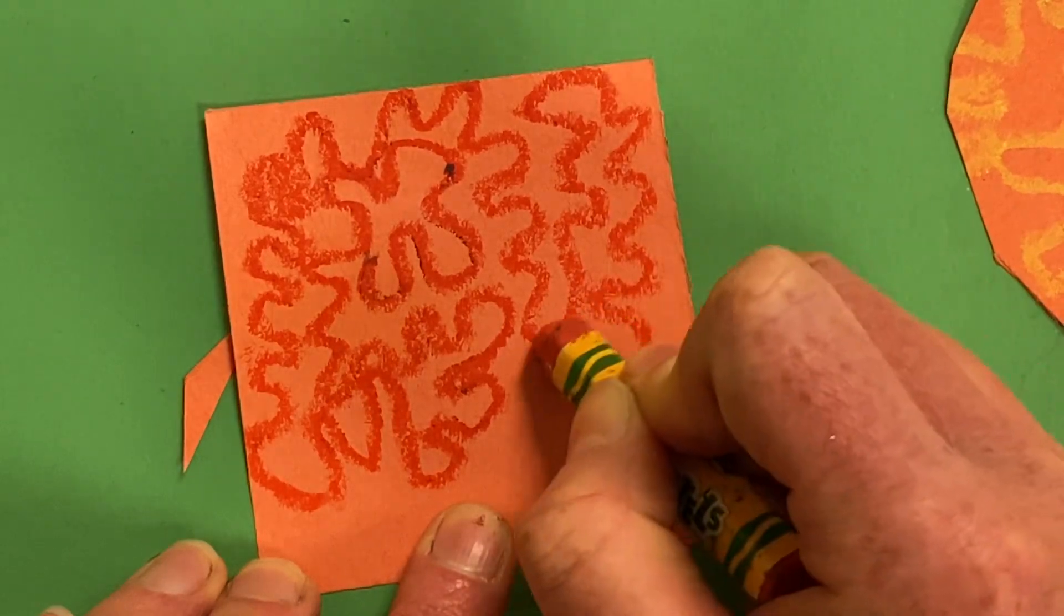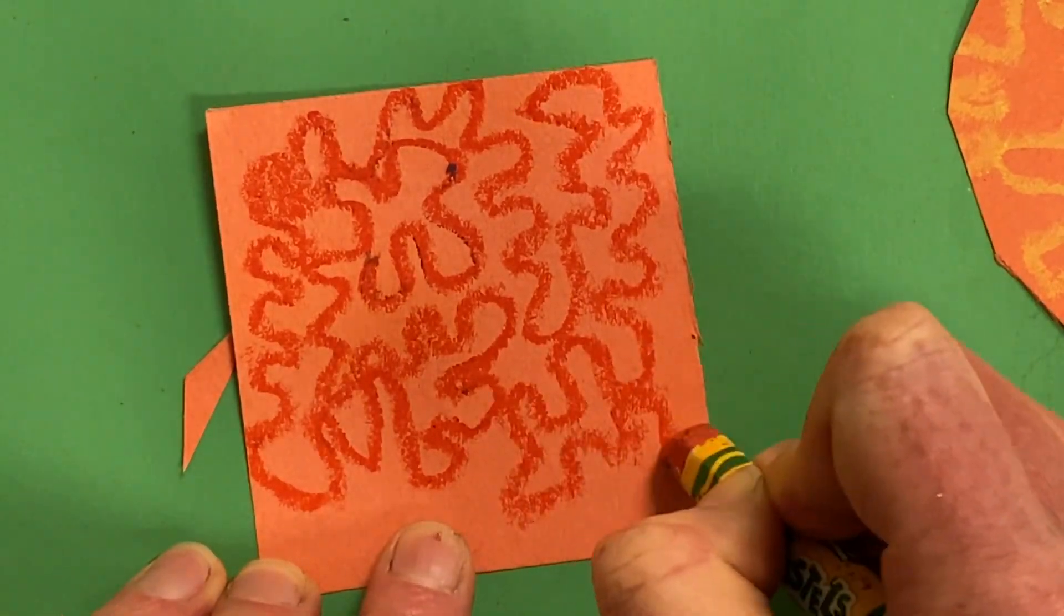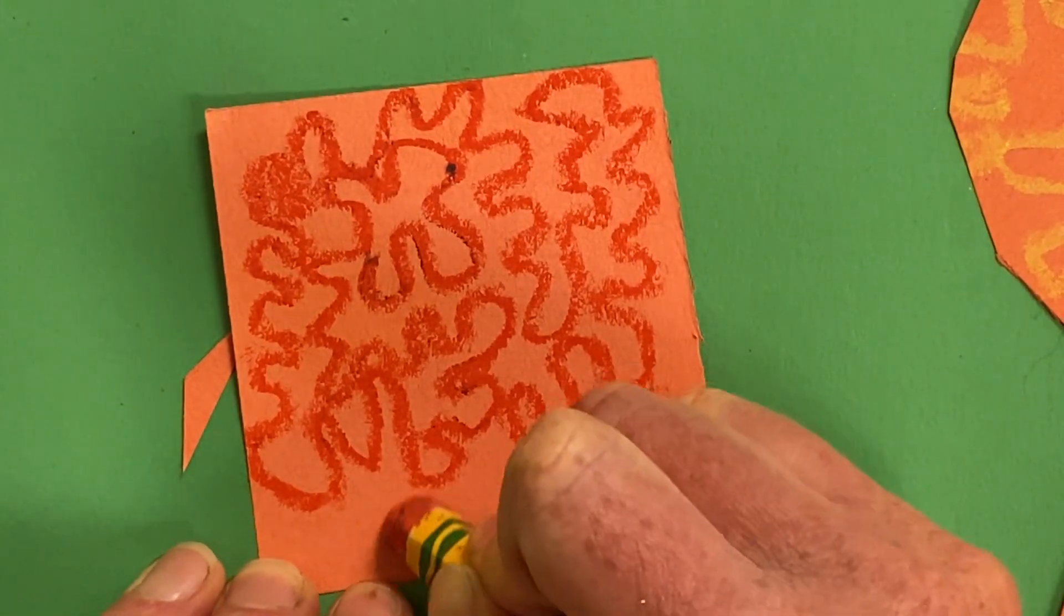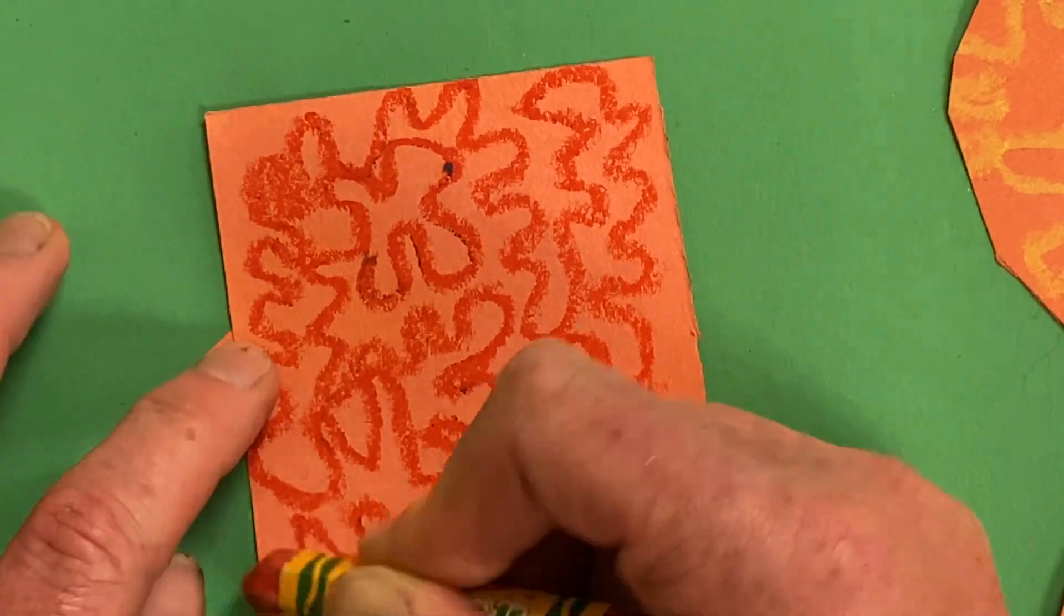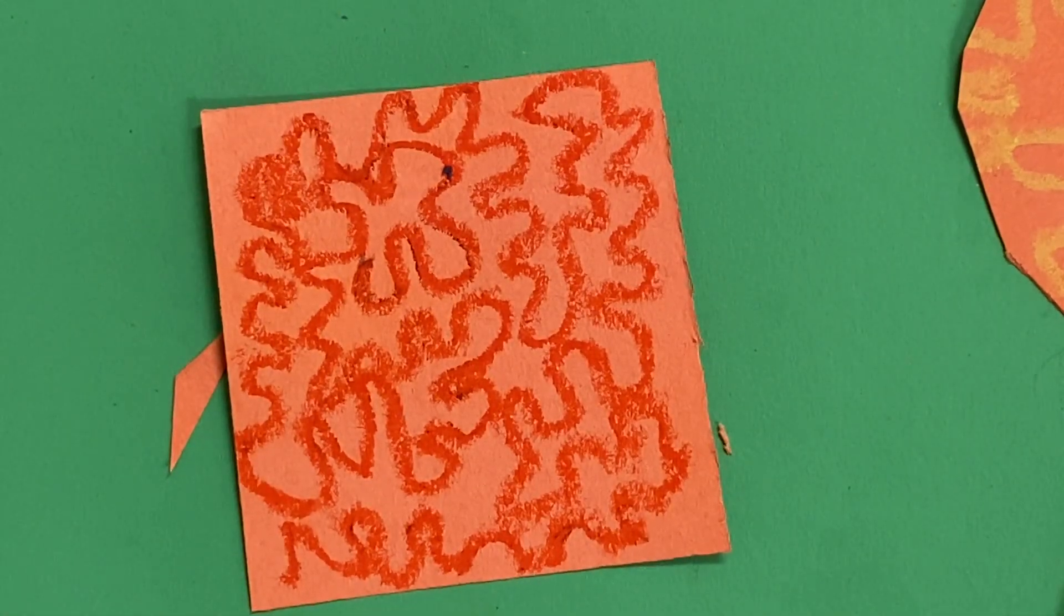And again, I'm not scribbling. Scribbling is when I draw lines that cross over one another and not very thoughtful. If your lines cross, that's okay, but fill up that space.